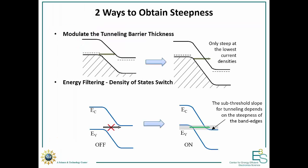As we saw earlier, there are really two ways to obtain a steep turn-on in tunneling. One is to change the thickness of the tunneling barrier from a thick barrier — then we apply some voltage, pull this down, and make the barrier thinner and switch it on. Alternatively, we can rely on the alignment of the band edges: where they don't align, no current can flow; with a little bias, they do align, and we can get a sharp turn-on.